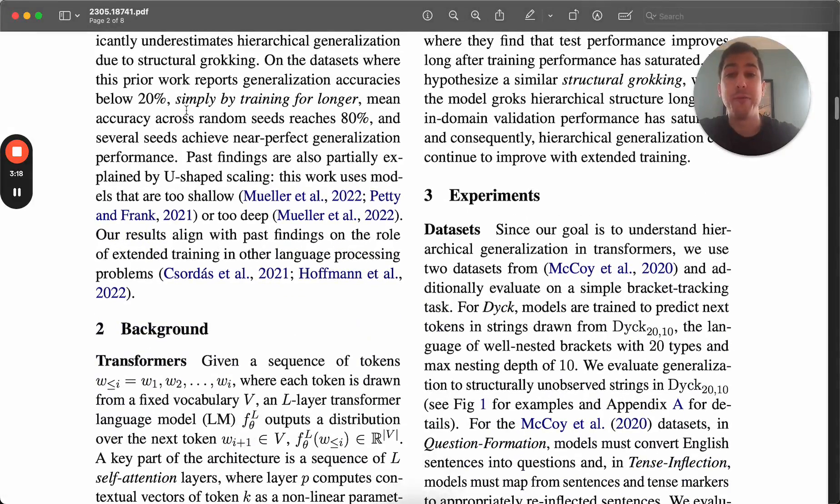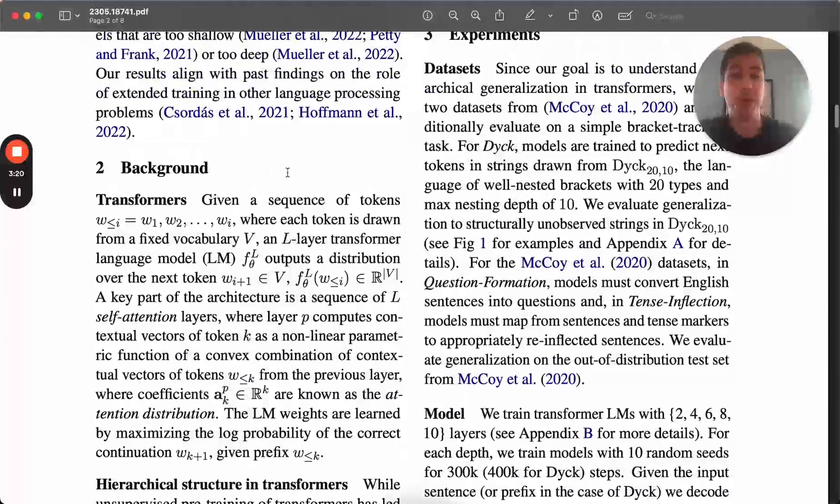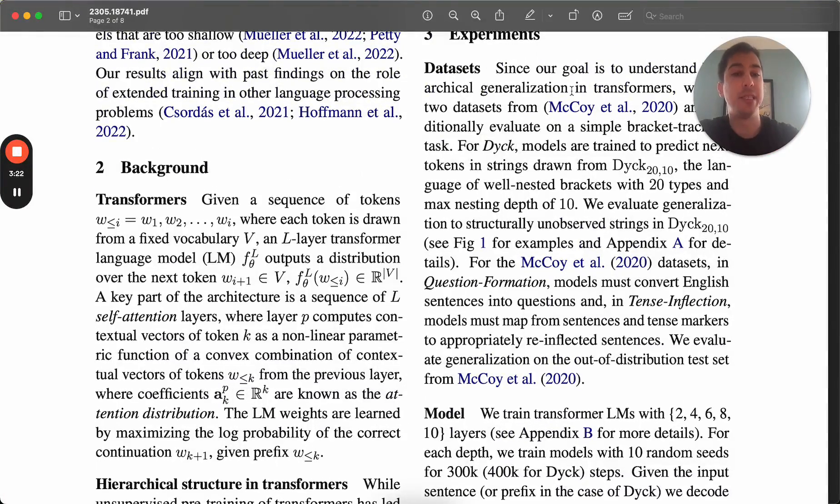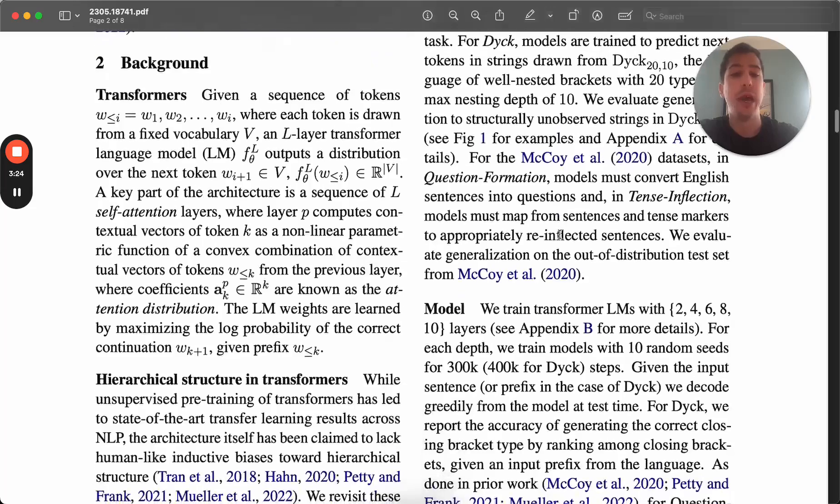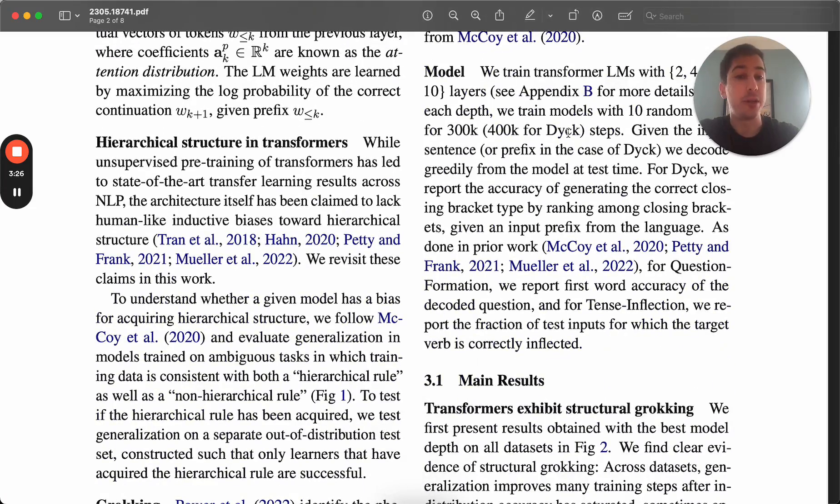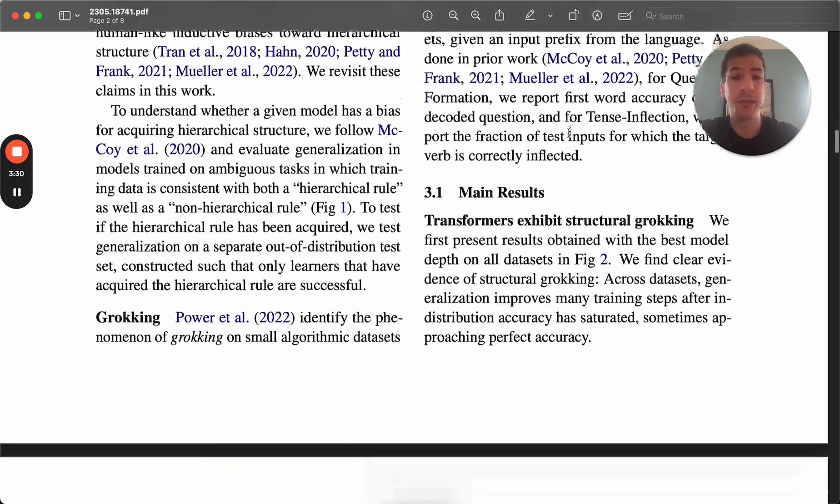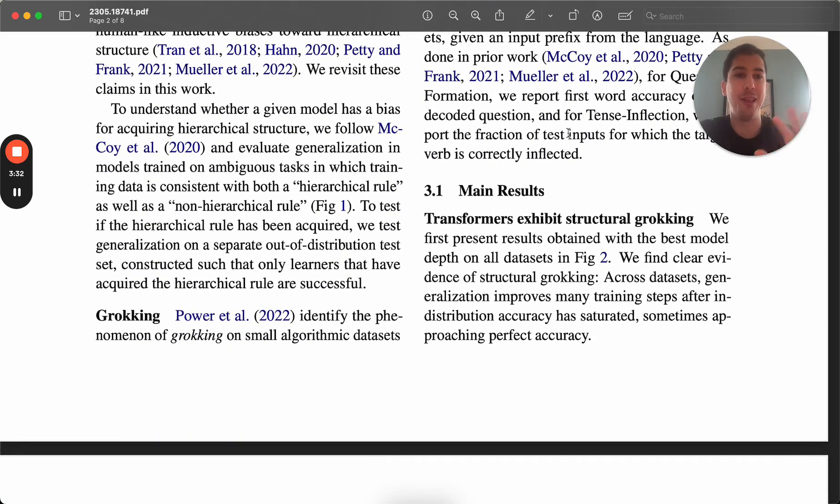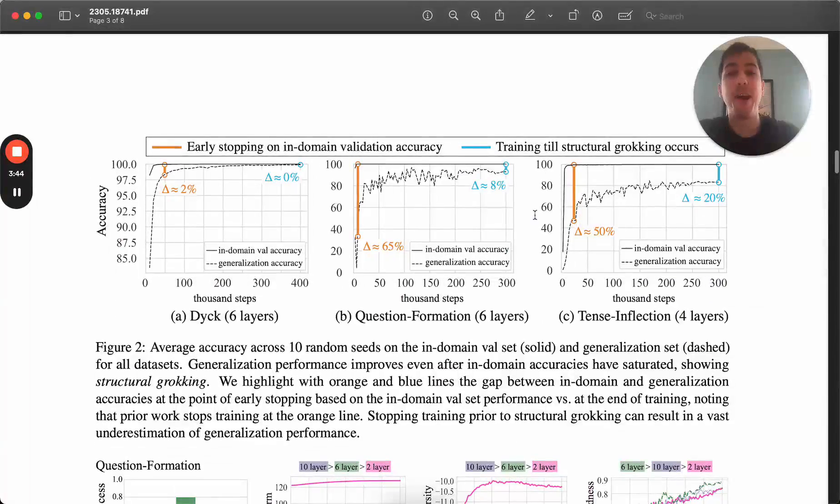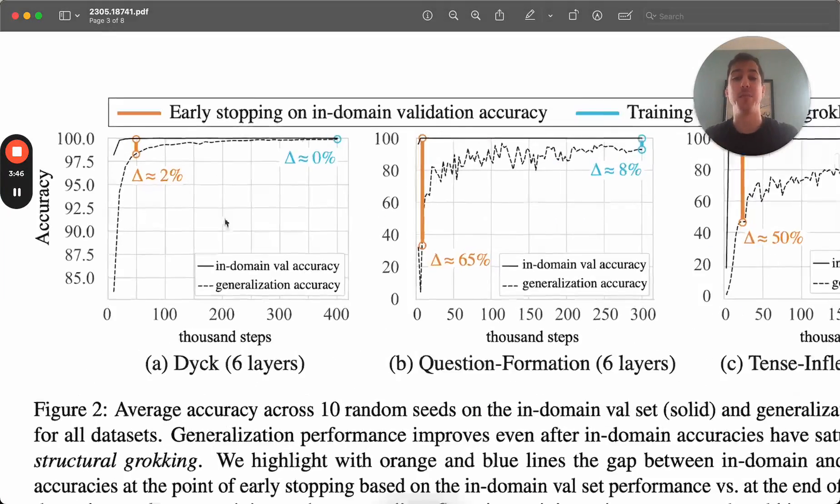So what they find in particular, they go through all of their setup and the data sets that they use. The models are not complicated. These are relatively small transformer models compared to the traditional LLM that everyone talks about these days. And their main results basically are summarized in this subheader. Transformers do exhibit structural grokking, but they find that this is only in some certain cases.